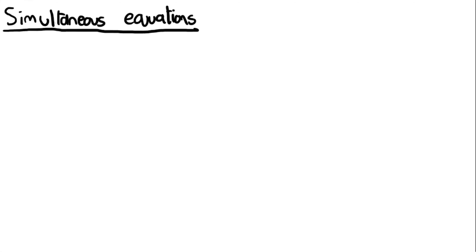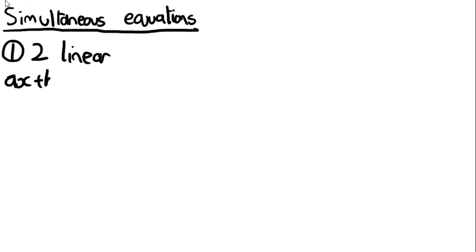Hopefully you know from GCSE that simultaneous equations are two equations where you need to find values that make both of them true at the same time. There are two types of questions they could ask you. The first is when you're given two linear simultaneous equations, in the form ax + by = c and dx + ey = f.